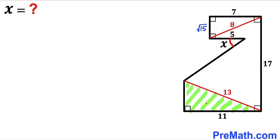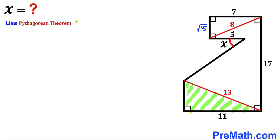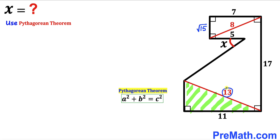Now let's focus on another right triangle whose side lengths are 11 and 13, and we are interested in calculating this unknown side length. We are going to apply the Pythagorean theorem on this triangle as well. Here the hypotenuse is 13, and I'm going to label this unknown side length as lowercase a. Filling in the formula, we get a² + 11² = 13².